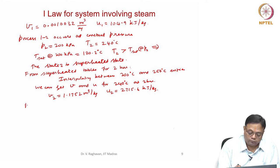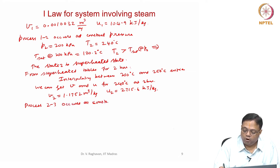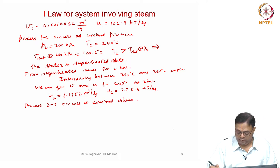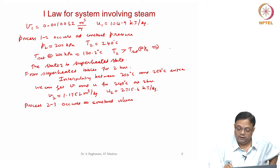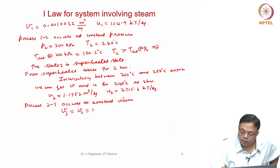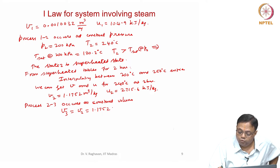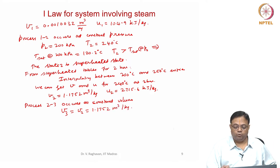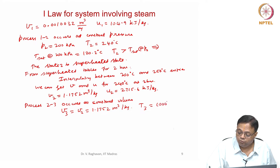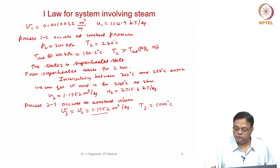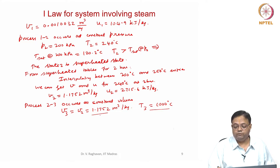For state 3, process 2 to 3 occurs at constant volume. Why? Because the piston is now hitting the stops — it cannot move upwards, so constant volume applies. V3 = V2 = 1.1752 m³/kg. One value is fixed, and the given final temperature is 1000 degrees centigrade.